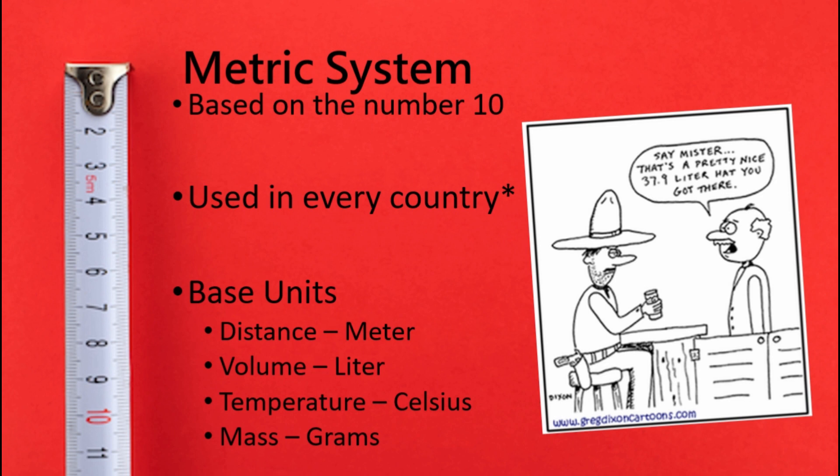When we look at the metric system, it has a couple of base units — these are the common units used. For distance, we use meters. For volume of an object, it's liters. For temperature, we use Celsius. And for mass, we use grams.